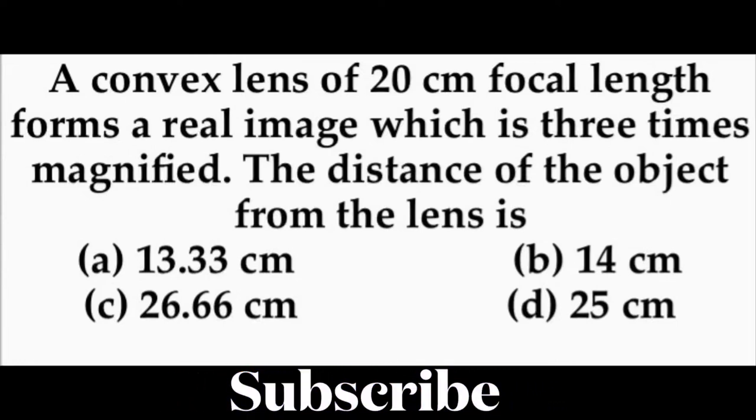A convex lens of 20 cm focal length forms a real image which is 3 times magnified. The distance of the object from the lens is: A. 13.33 cm, B. 14 cm, C. 26.66 cm and D. 25 cm. So, see...